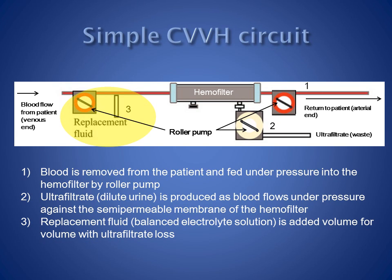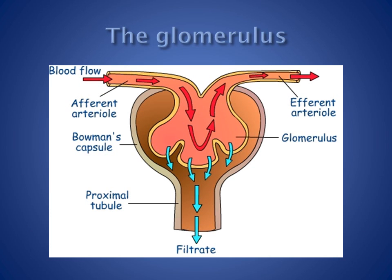In patients with fluid overload, less fluid is replaced than is lost as ultrafiltrate, with a reduction in intravascular volume. The haemofilter is simply a large glomerulus. The semi-permeable membrane is a substitute for the highly permeable, high surface area glomerular capillaries.